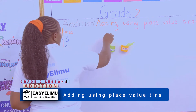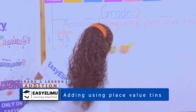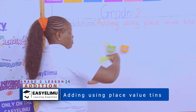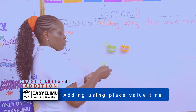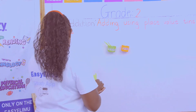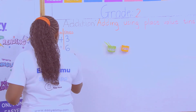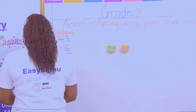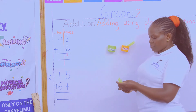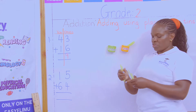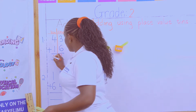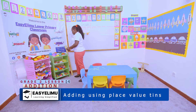In the same tens place value we need one. So I take all the sticks and count: one, two, three, four, five, six, seven, eight, nine — so in the ones I have nine. In the tens place value I count: one, two, three, four, five — so I have five. The answer is 59.